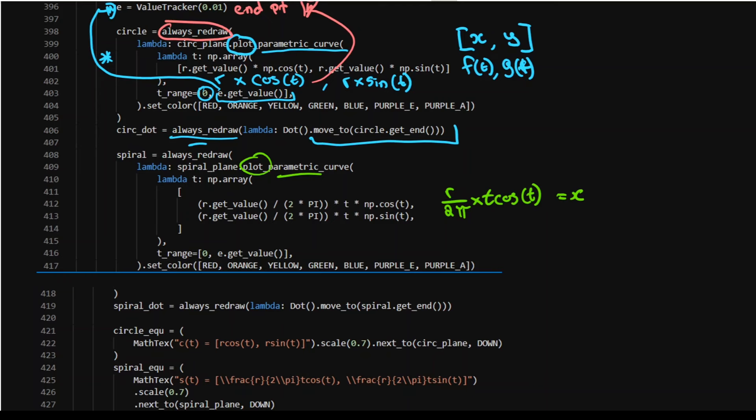And then the similar thing for Y is the same thing, R over two pi times by T sine of T. And I've got this as an array. That's just how you wanna plot your parametric stuff.